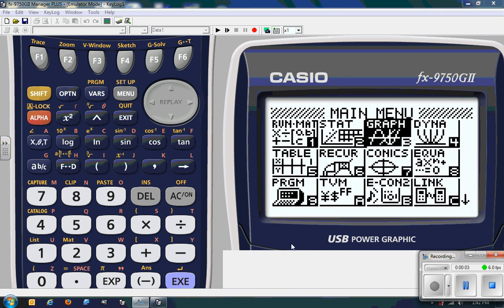All right, I love requests. This first one is about the fx-9750GII. So you're not seeing things. This is the fx-9750GII, about $49.50 on the market. A very powerful little calculator.